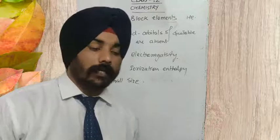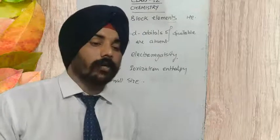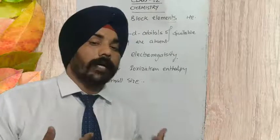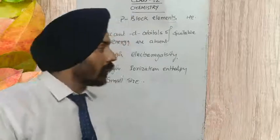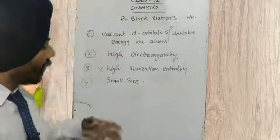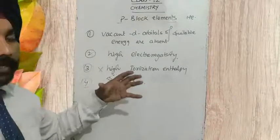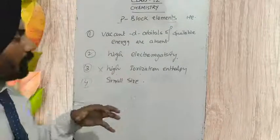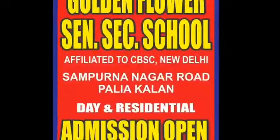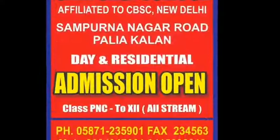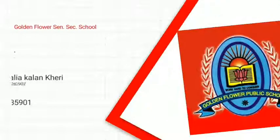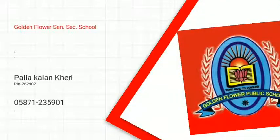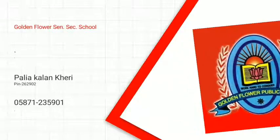Thus the first element of each group does not show the same kind of compounds that the other elements make. That is why the first element of each group is different. Do self-study at home and stay home, save lives. Thank you very much.